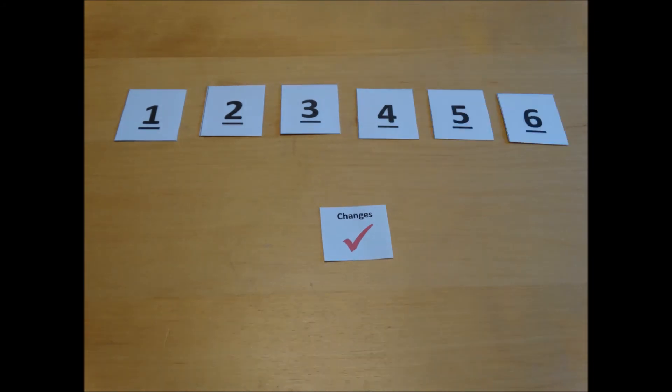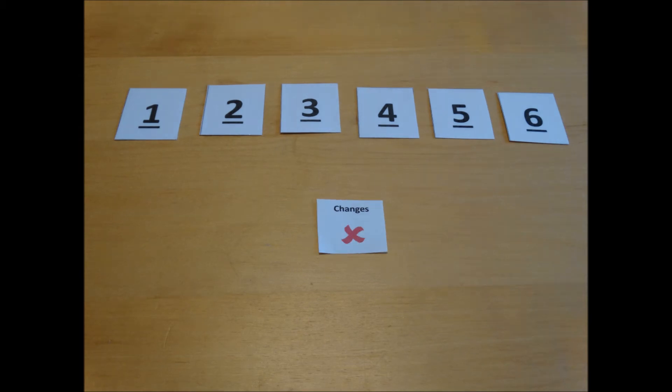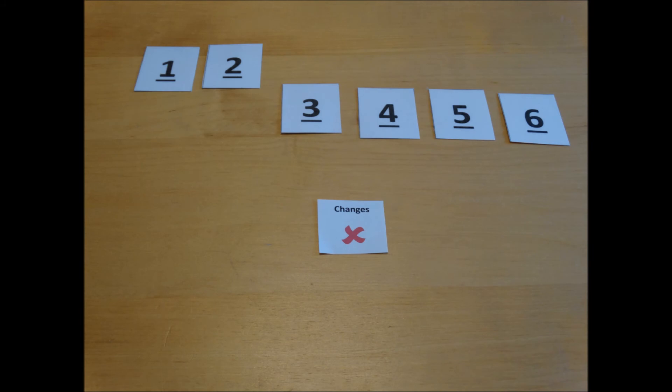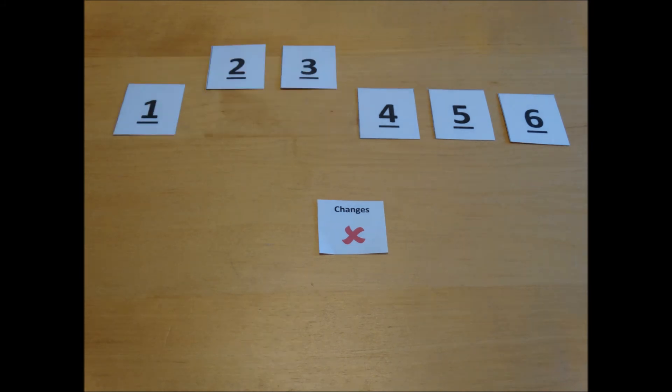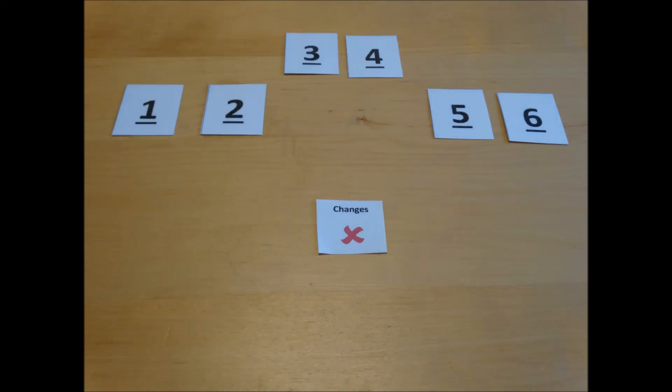In this example, because it's such a small array, we can see that it's in the correct order. However, because on the last pass changes were made, we still need to go through the whole process again just to make sure.